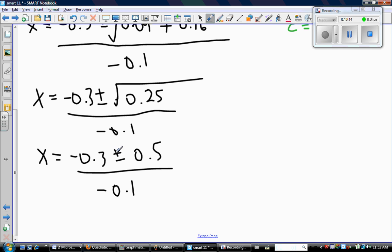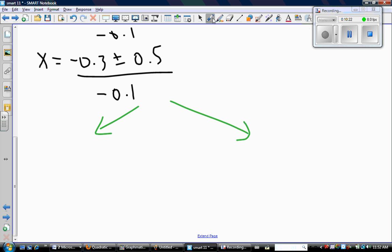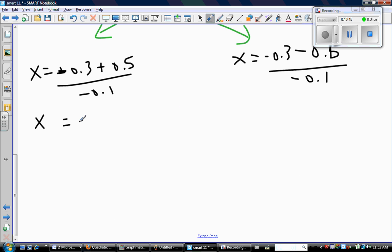So the only thing left to do is plus minus. And that's when you separate this into two different answers. One for the plus and one for the minus. So x equals negative 0.3 plus 0.5 divided by negative 0.1. And x equals negative 0.3 minus 0.5 divided by negative 0.1. So two pieces of math to do, and then we'll have our roots. So here, negative 0.3 plus 0.5 divided by negative 0.1 gives me negative 2. And this gives me 8. So these are my roots.